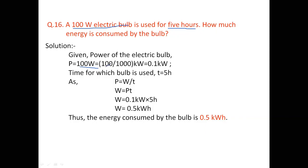It is 0.1 kilowatt, the power of that bulb. Time for which bulb is used is 5 hours. Simply we will calculate using the formula P is equal to W by T. W, that is the work done by the bulb, is power into time taken.